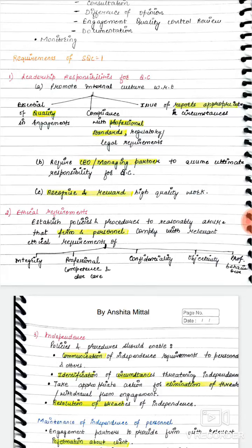Now let's move to ethical requirements, which is the second main point of SQC1's requirements. We know ethical requirements from previous studies — integrity, professional competence and due care, confidentiality, objectivity, and professional behavior. These are the ethical requirements. You should work with integrity; if you are not competent to perform work, how can it be ethical?